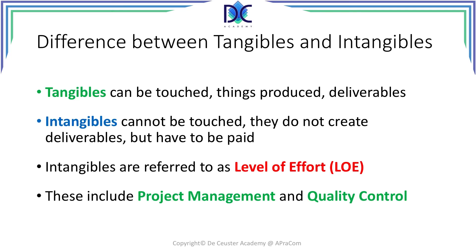The difference between tangibles and intangibles is not so difficult to understand. Tangibles are things that can be touched, things we produce — for example, the deliverables. Even a project code is a tangible.